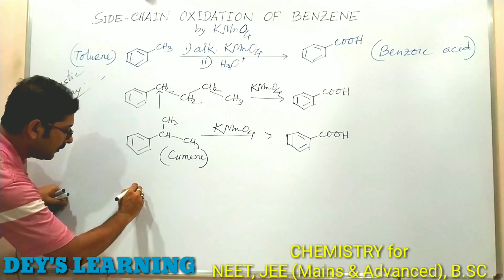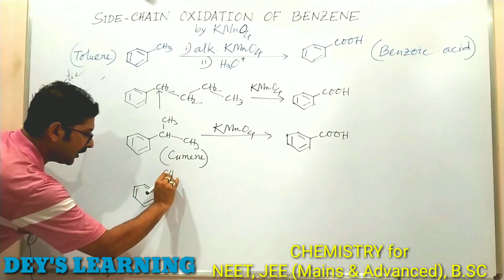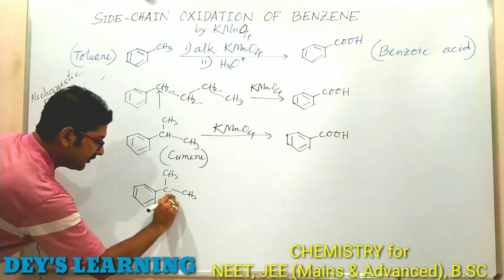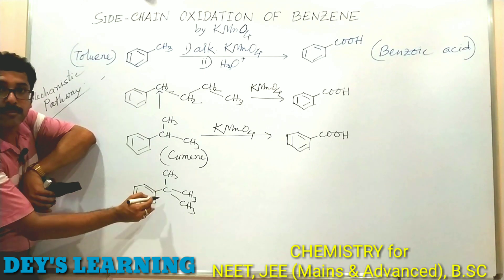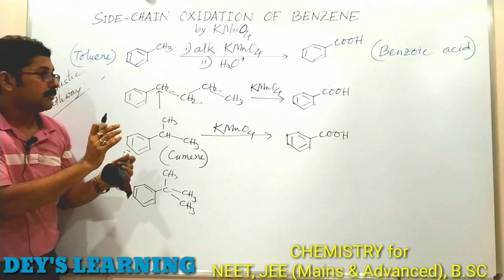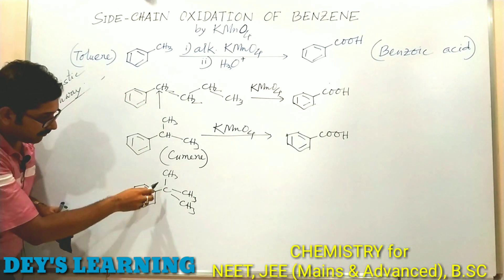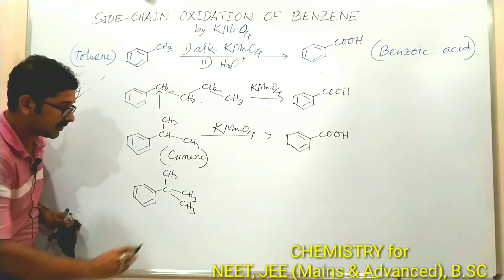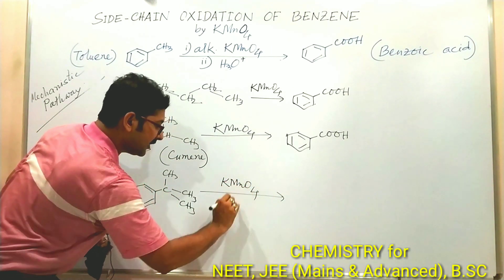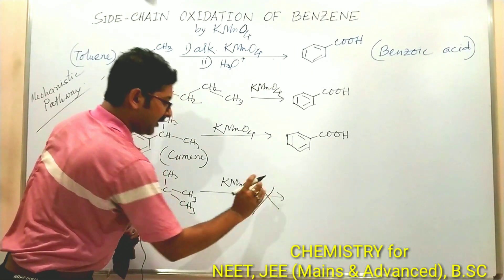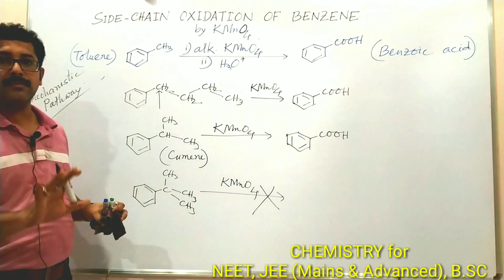Now the question is: will all molecules with a benzylic carbon be converted to benzoic acid? The answer is no. If there is no hydrogen at the benzylic position, for example tertiary butylbenzene (Ph–C(CH₃)₃), there is no benzylic C–H bond. The driving force of the reaction is the stability of the benzylic carbocation and free radical, but without a C–H bond at that position KMnO₄ cannot oxidize this molecule. Therefore, tertiary butylbenzene will not be oxidized by KMnO₄.